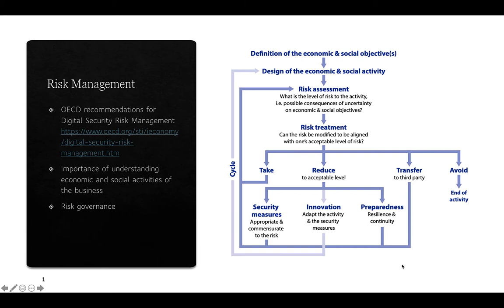The OECD simplifies risk treatments into four categories: you can take that risk and not do anything about it; you can reduce it; you can transfer it to a third party — which we mentioned before is either taking out cyber insurance or using third parties to manage some infrastructure for you; or you can avoid it and end the activity entirely.